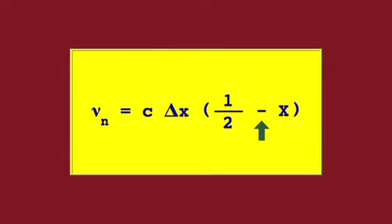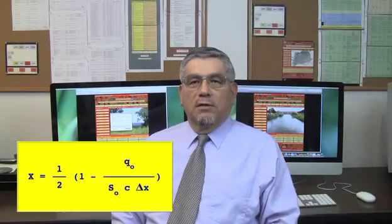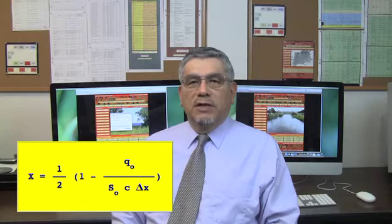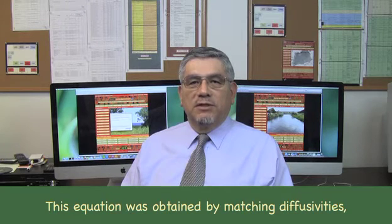For x less than 0.5, the numerical diffusion is positive. For delta-x equal to 0 — clearly the trivial case — the numerical diffusion is zero. A predictive equation for x can be obtained by matching the hydraulic diffusivity of the diffusion wave with the numerical diffusion coefficient of the Muskingum scheme. This leads to an expression for x, so the routing parameter x can be calculated as a function of: reference discharge per unit width, bottom slope, kinematic wave celerity, and reach length.